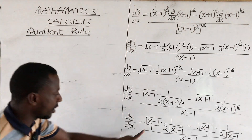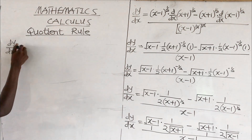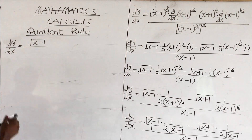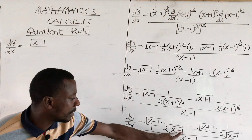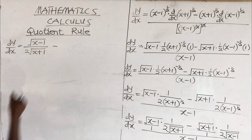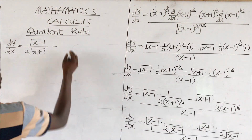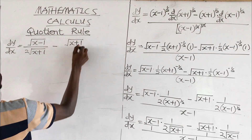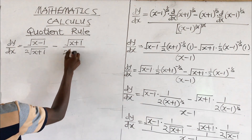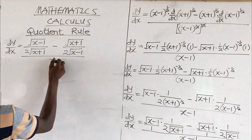Multiplying through: root of (x minus 1) times 1 gives root of (x minus 1), all over 1 times 2 root of (x plus 1). Minus root of (x plus 1) times 1 gives root of (x plus 1), all over 1 times 2 root of (x minus 1). All over x minus 1.